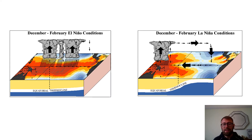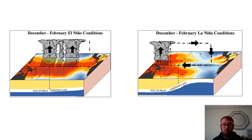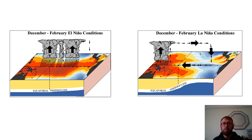La Niña is the same as a normal year but more extreme. The trade winds get stronger than normal, pushing even more warm water towards Australia, leading to a greater amount of evaporation, stronger storms forming, and more likely tropical storms in places like Australia — which can be really deadly and cause lots of problems. For South America, the warm water is pushed even further away, we might get even greater upwelling of colder water, leading to even less evaporation and more extreme droughts in that area.